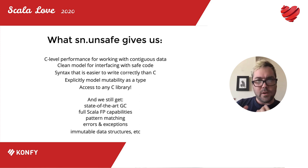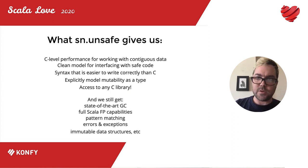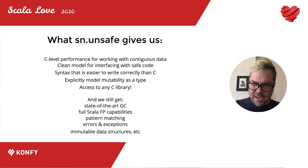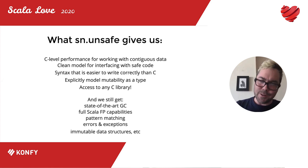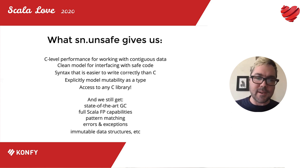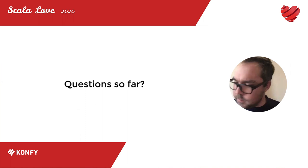The takeaways for this unsafe API: it gives us C-level performance for working with contiguous data structures, a clean model for interfacing safe code with unsafe code, and syntax that's much easier to write correctly than C. When I was writing the LibUV bindings, I wrote a lot of them correct the first time, which certainly never happened when I was a working C programmer. It also gives you an explicit model of mutability — a pointer represents the capability to mutate a thing. And on top of all this unsafe stuff, you get all core Scala Native features: a state-of-the-art garbage collector, functional programming capabilities, pattern matching, errors, exceptions, and mutable data structures.